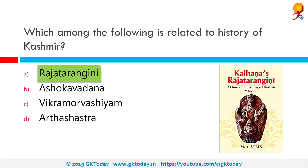Raj Tarangini is a metrical, legendary, and historical chronicle of the north-western Indian subcontinent, particularly the kings of Kashmir. It was written in Sanskrit by Kashmiri Hindu historian Kalhana in the 12th century CE.